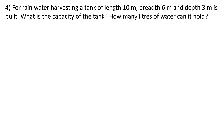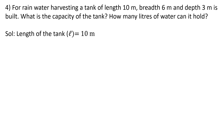Question 4 (last of this practice): For rainwater harvesting, a tank of length 10 metres, breadth 6 metres, and depth 3 metres is built. Depth means height. Find the capacity of the tank and how many litres of water it can hold. Capacity means volume. Length l = 10 m, breadth b = 6 m, height h = 3 m.